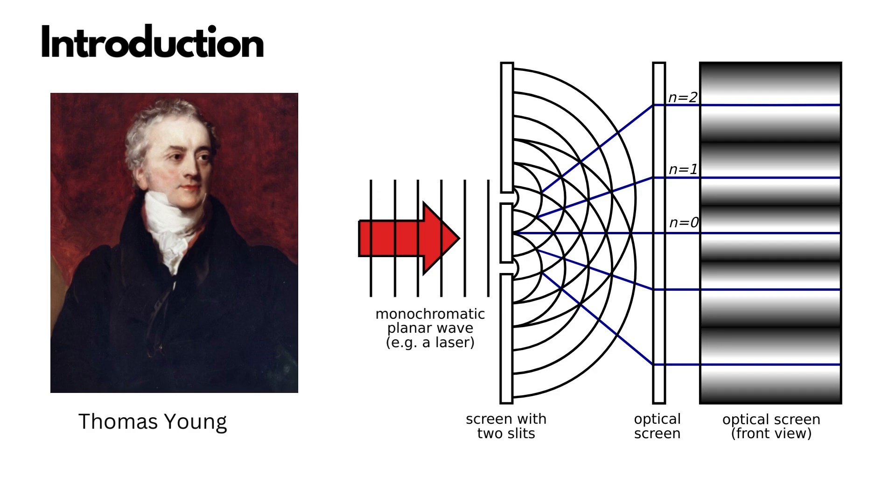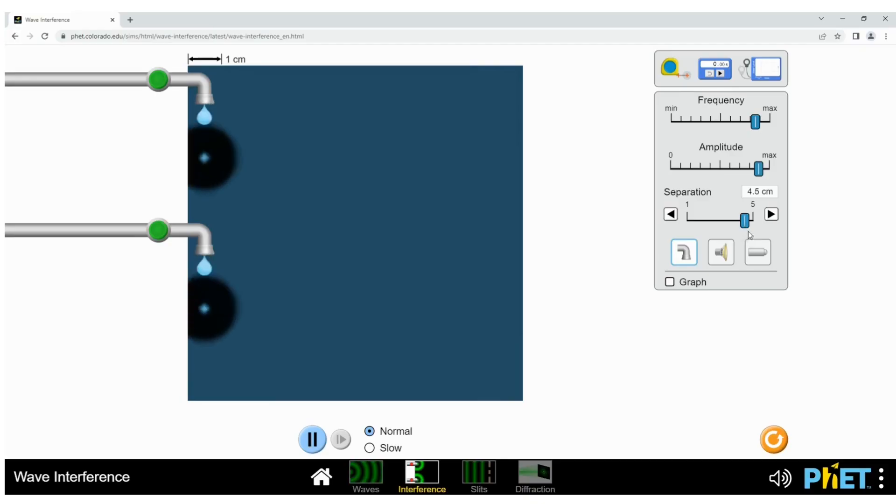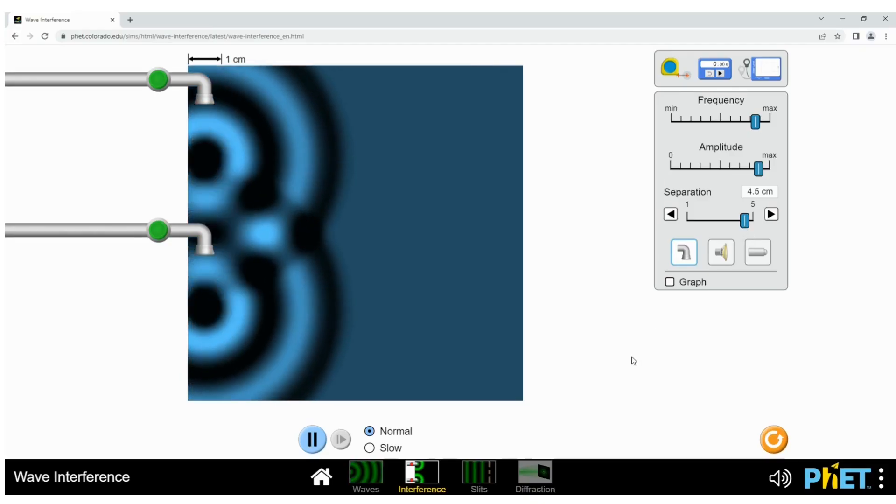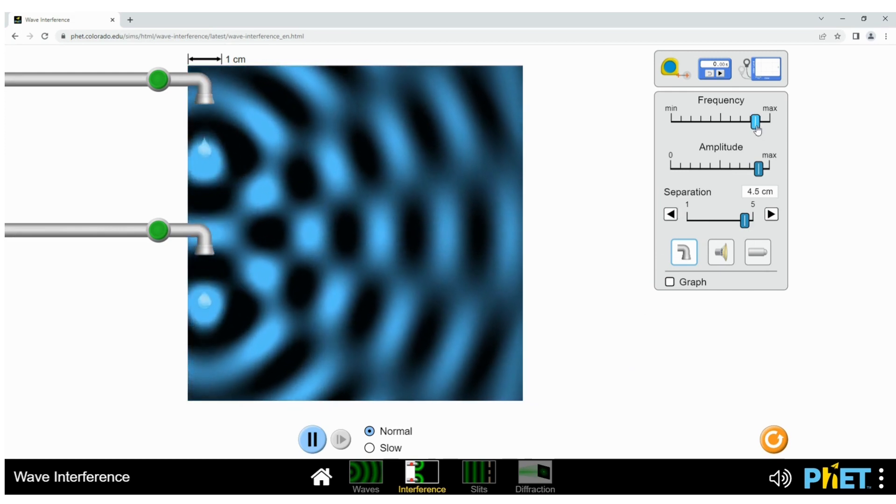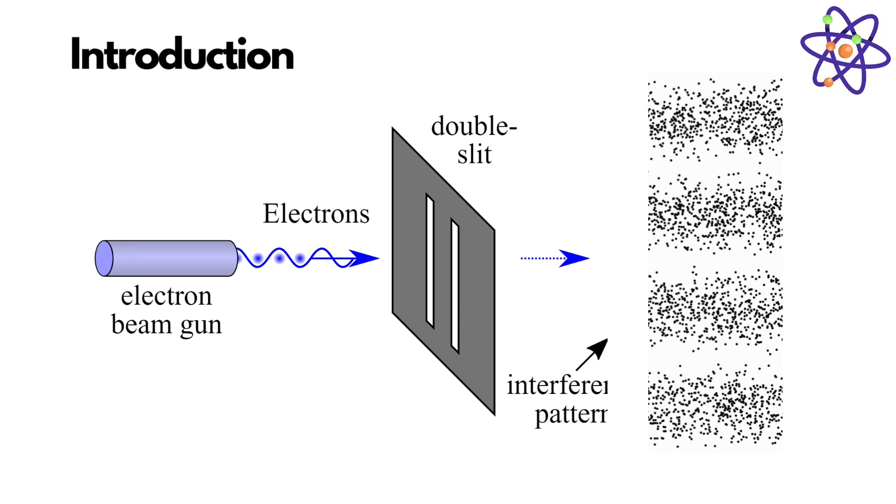This interference pattern was the result of light waves overlapping, similar to waves that form when two pebbles are dropped in a pond. This phenomenon could only be explained by light behaving as a wave, rather than a particle.